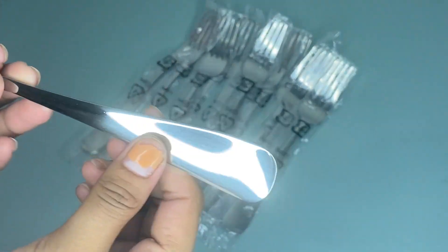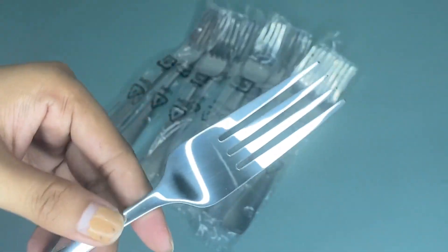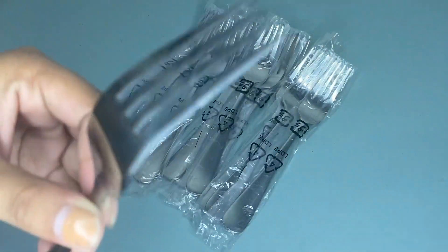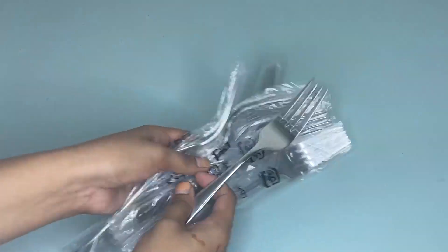As you can see, we have here these stainless steel dinner forks and the package comes with 12 pieces of these forks and it has round edges.